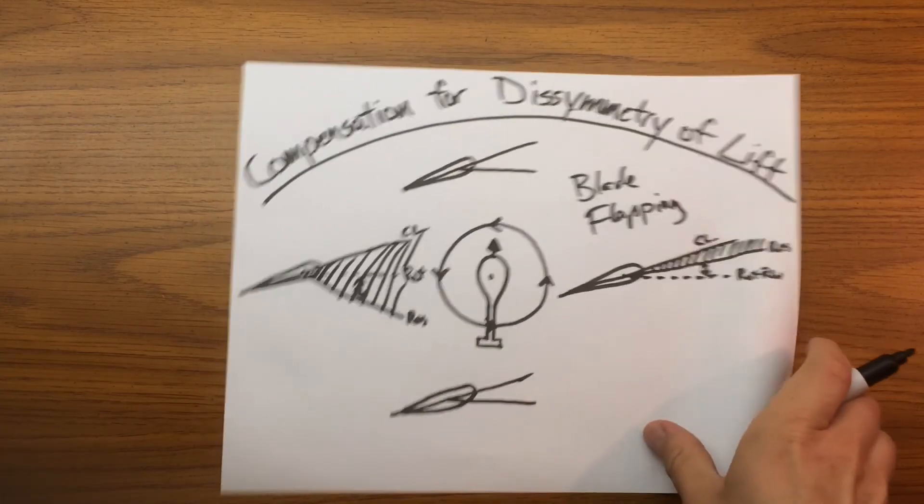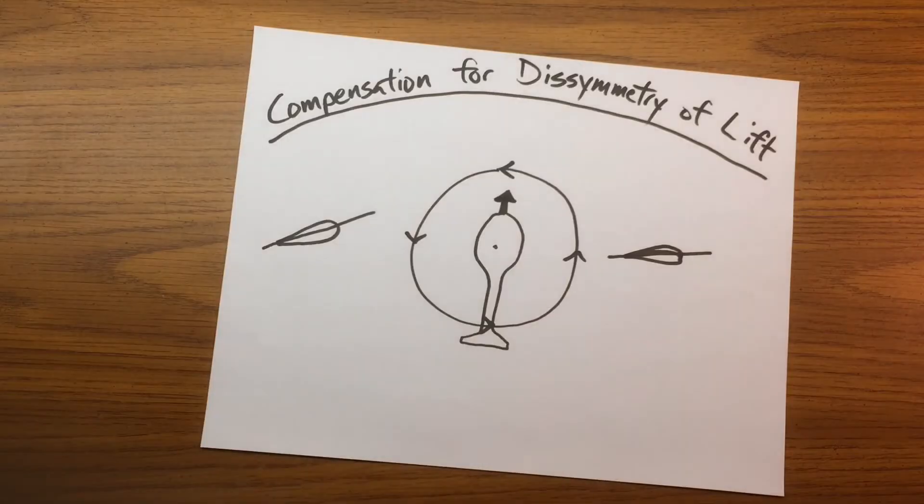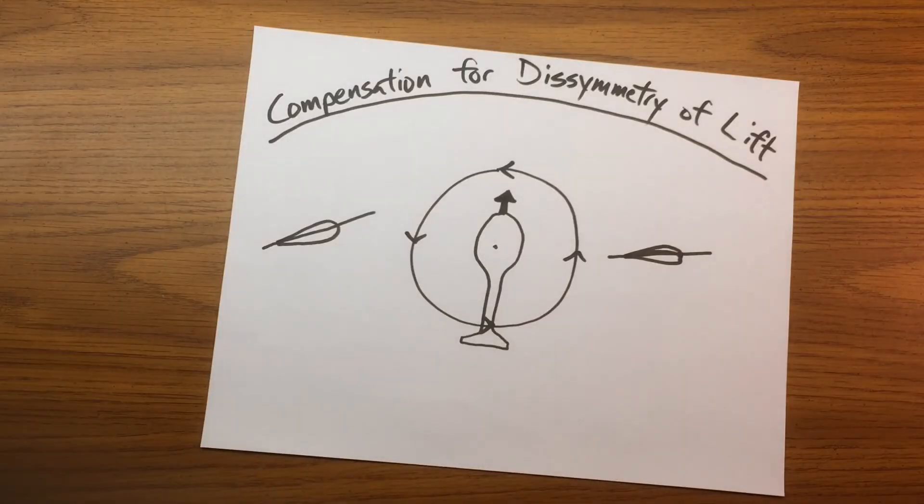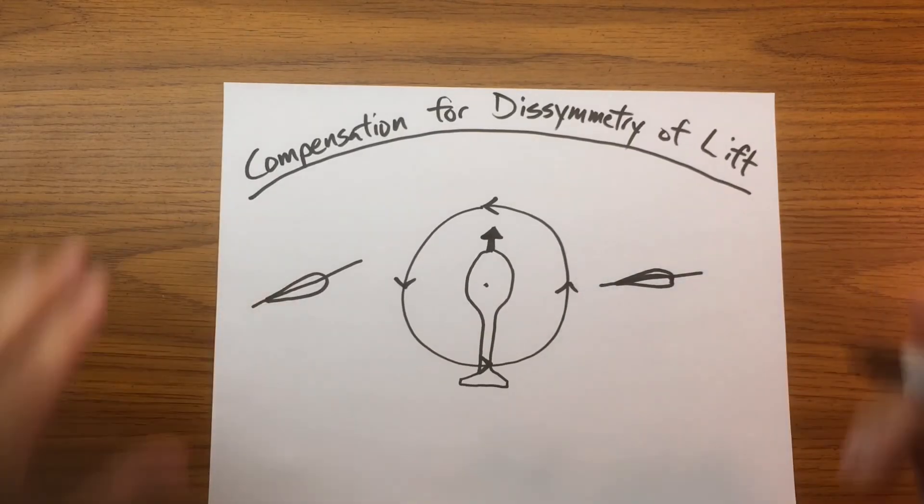Now after blade flapping, we have cyclic feathering, slightly different diagram. This one's a little bit easier, less in depth.